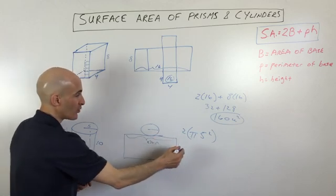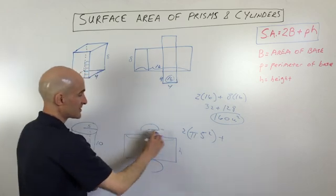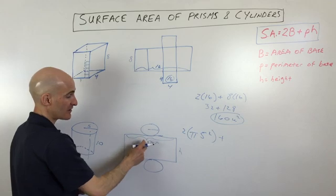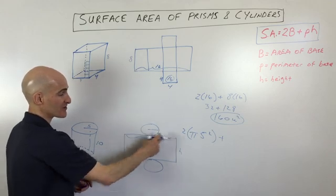So what we're taking is we're taking this length, two pi r, times the height to give us the area of the rectangle. So length times width or base times height, but this represents the circumference of the circle.